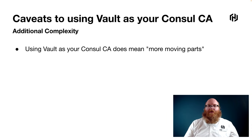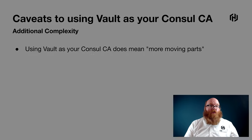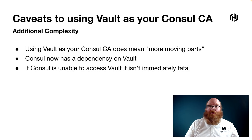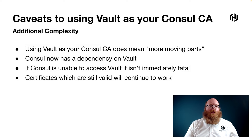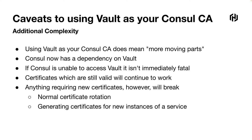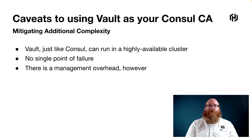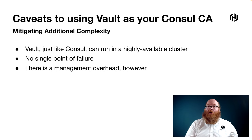There is additional complexity. Using Vault as your Consul CA does mean more moving parts because Consul now has a dependency on Vault. If Consul is unable to access Vault, it isn't immediately fatal — certificates which are still valid will continue to work. But anything requiring new certificates will break, whether that's normal certificate rotation or generating new certificates for a new service instance. You can mitigate that: Vault, just like Consul, can run in a highly available cluster with no single point of failure. But there is management overhead there.